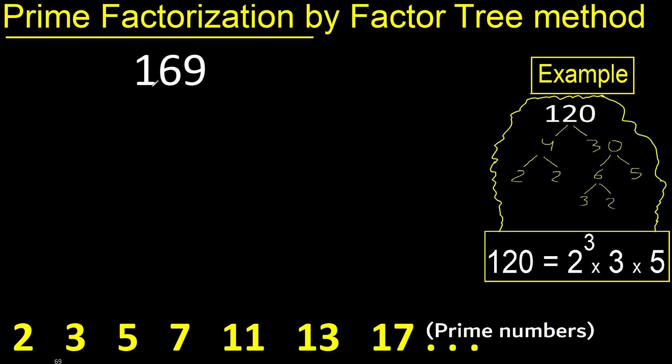Prime factorization: finding two numbers that multiply to 169. 169 cannot be divided by 2 because the last digit is not even, cannot be divided by